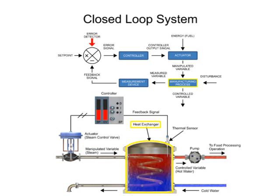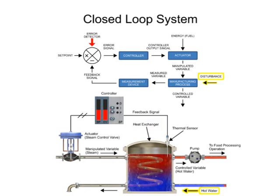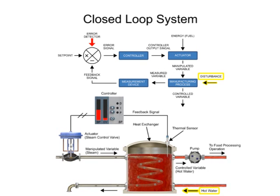The manufacturing process is the operation of the heat exchanger to control the physical variable. Disturbance is defined as a change in the manufacturing process, resulting in a change in the control variable. Disturbances occur when the water temperature suddenly changes or stops flowing.